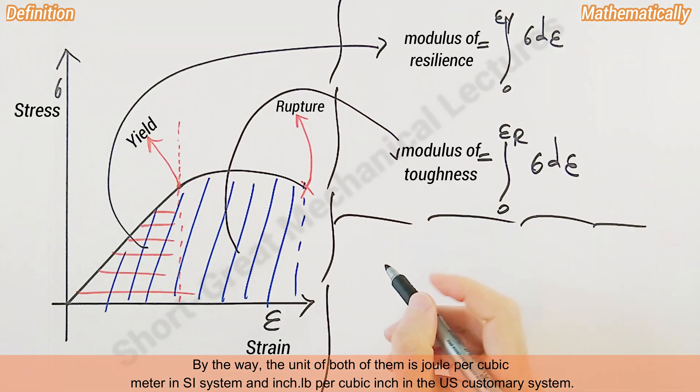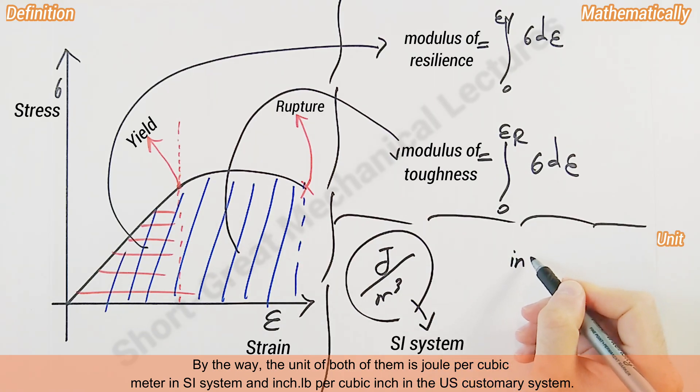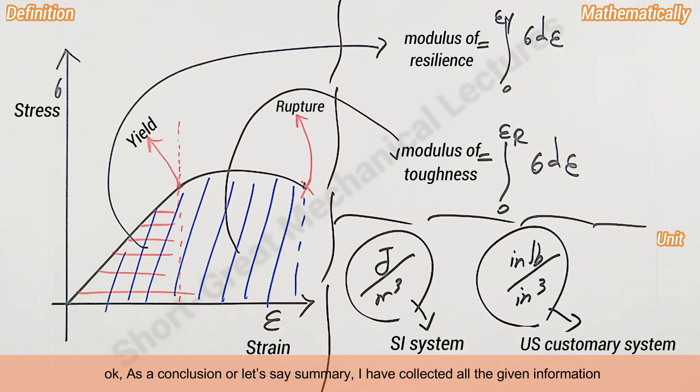By the way, the unit of both of them is joule per cubic meter in the SI system and inch-pound per cubic inch in the US customary system. As a conclusion, I've collected all the given information on one single page you can get in only 10 seconds.